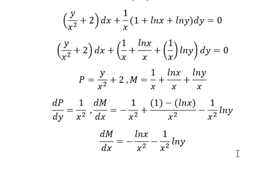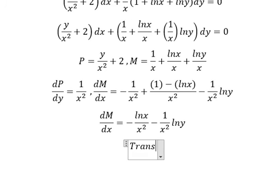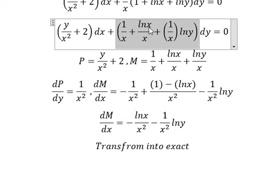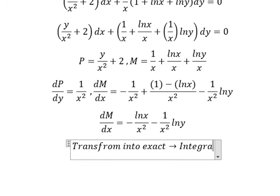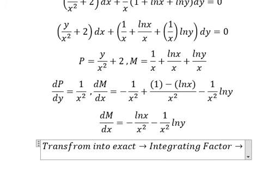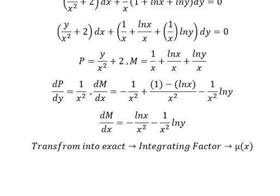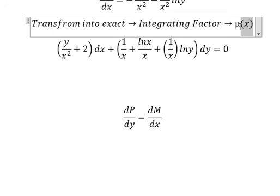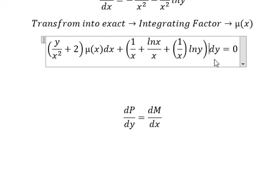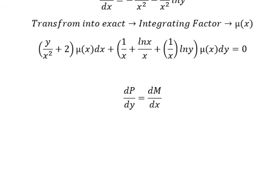So we can use the integrating factor. I will select the integrating factor — that means this one and this one should be about the same. So in this situation, we need to multiply both sides by this one, going in here and here.